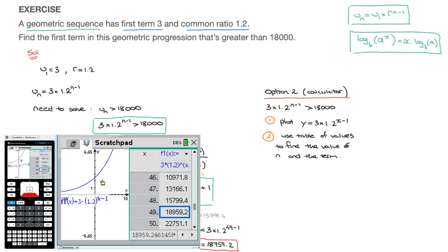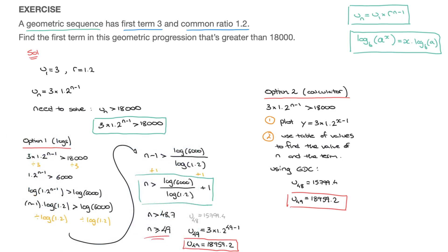On our exam paper, we could simply write: using GDC (graphical display calculator), the 48th term U sub 48 equals 15,799.4 and the 49th term U sub 49 equals 18,959.2. Both option 1 (logarithms) and option 2 (calculator) would be valid in an exam. We now know how to find the first term in a geometric progression that's greater than some given value — in this case, 18,000.